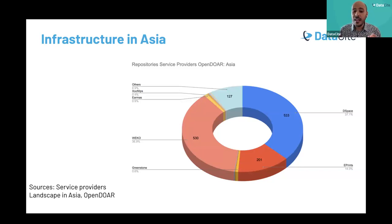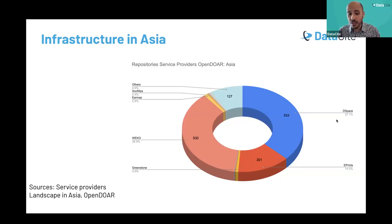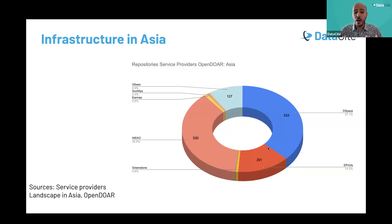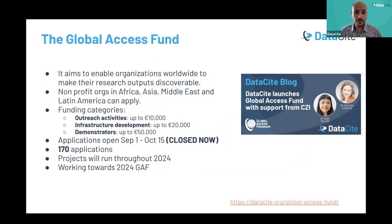We are also analyzing the service provider landscape for institutional repositories in Asia. The third component of our Global Access Program is the Global Access Fund (GAF). We launched a funding opportunity open to all non-profit organizations based in Africa, Asia, Middle East, and Latin America.